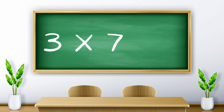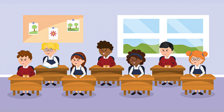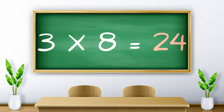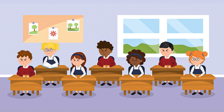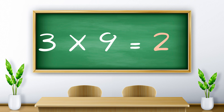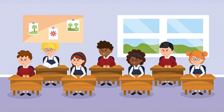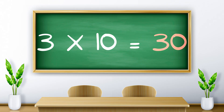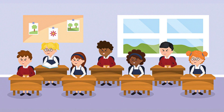Three sevens are twenty-one. Three eights are twenty-four. Three nines are twenty-seven. Three tens are thirty.